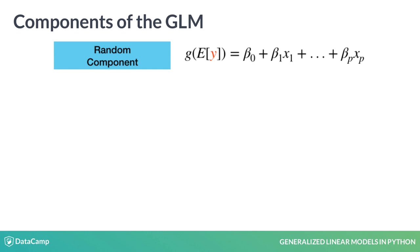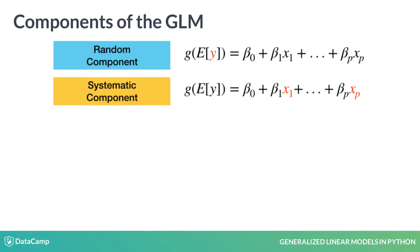The first is the random component, which defines the response variable y and its probability distribution. As we saw previously, there are different response data types to consider depending on your data problem. One important assumption here is that the observations y1 through yn are independent.